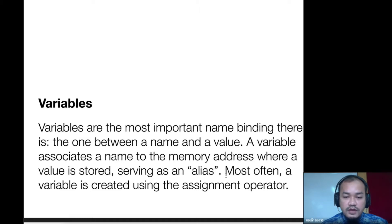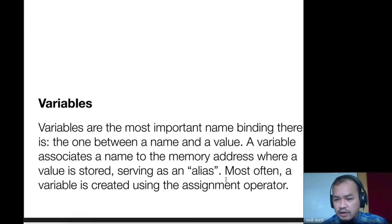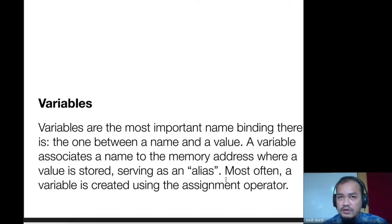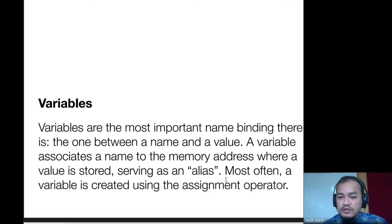Most often a variable is created using the assignment operator. When you create a variable, it will allocate memory in your computer. Whatever kind of variable you create will make a reservation in memory and then store some kind of value. That's why we call it binding — for example, you create variable 'one' equal to 1, meaning you want to store 1 and that variable allocates memory in your computer.